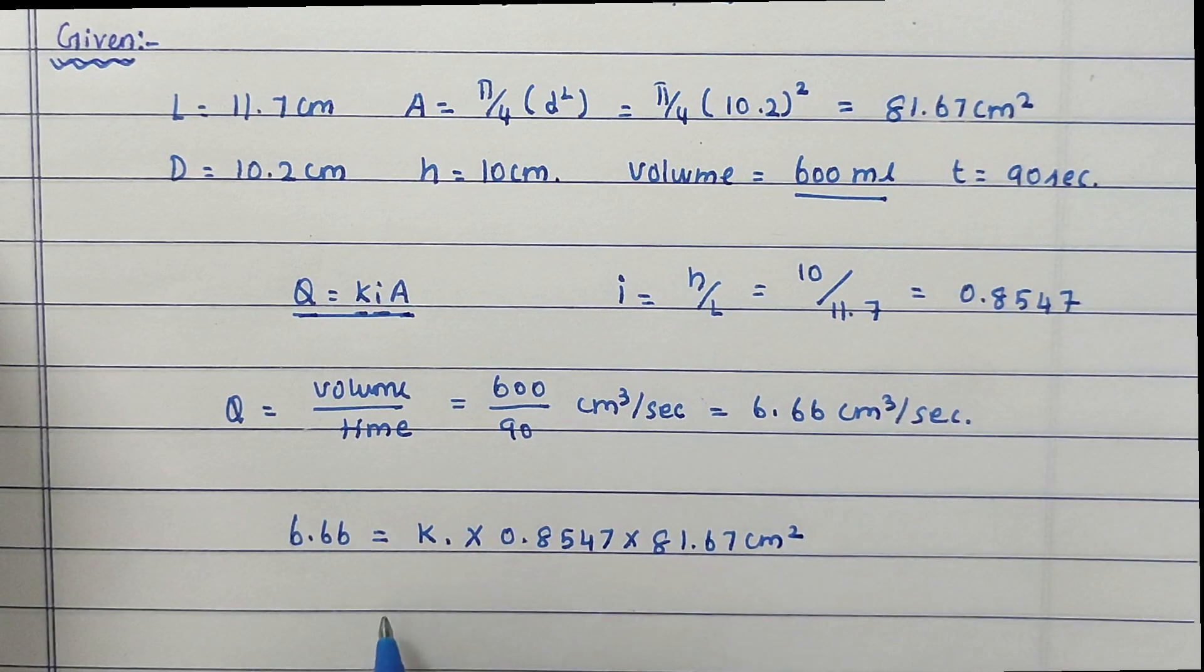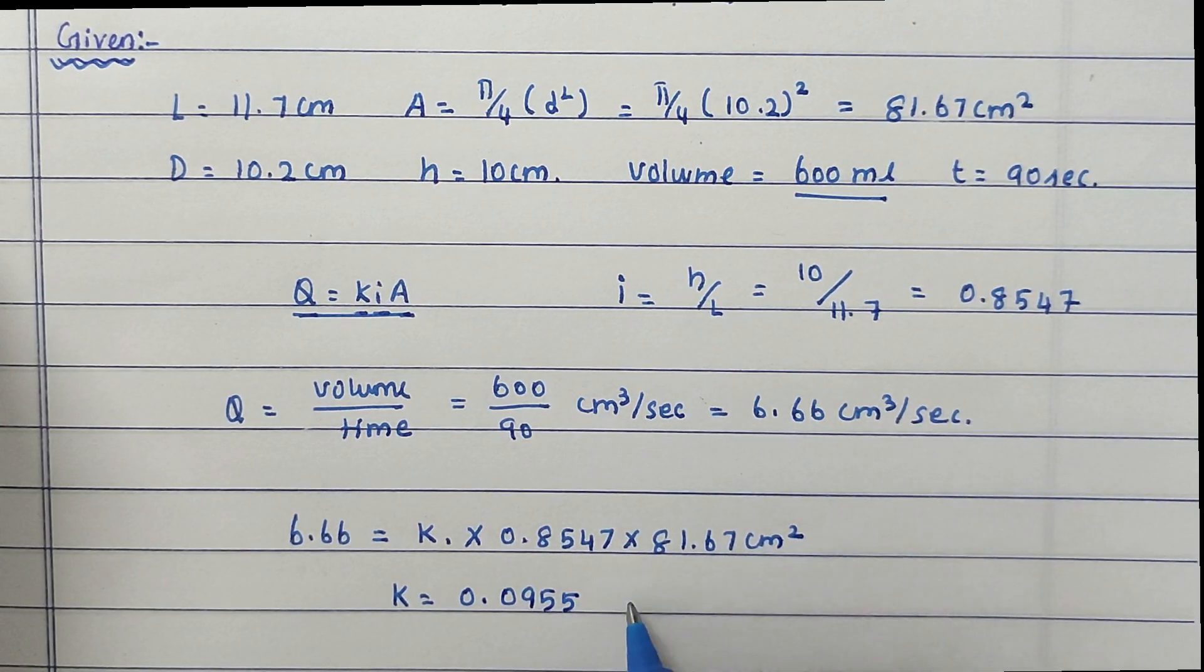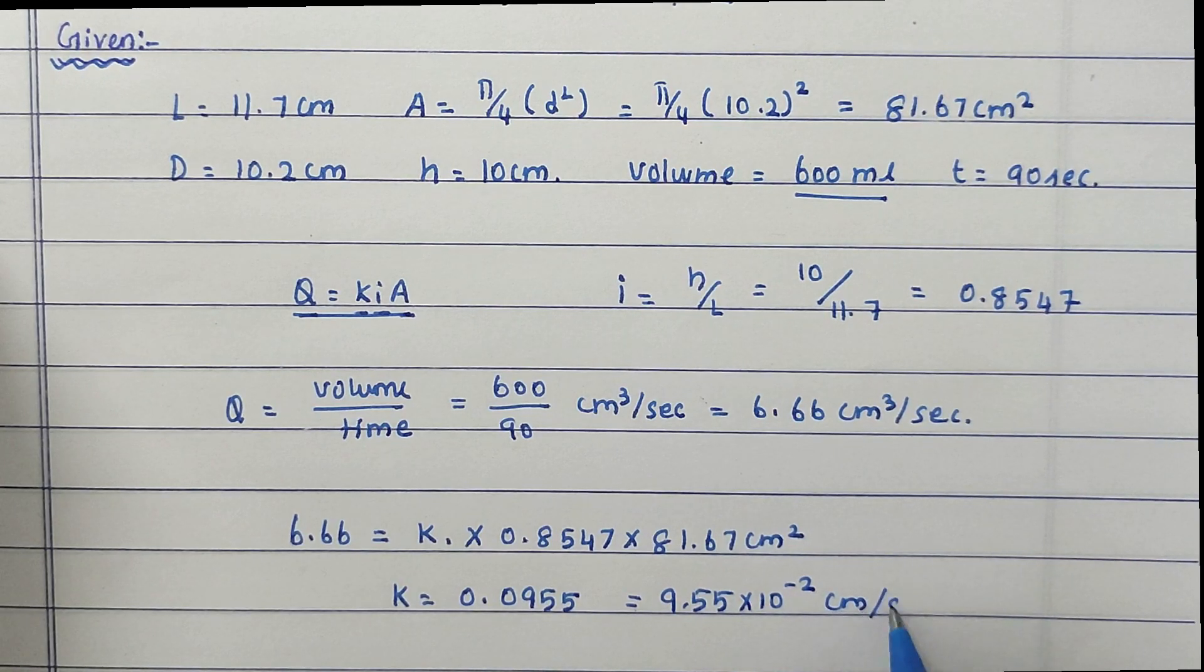Solving this we get k = 0.0955, which is 9.55 × 10⁻² cm/sec.